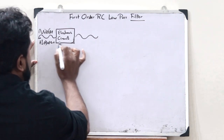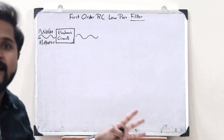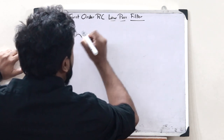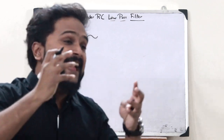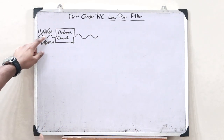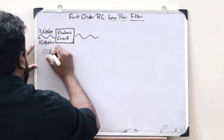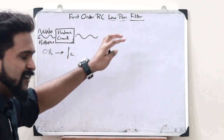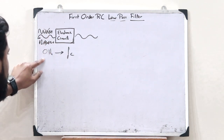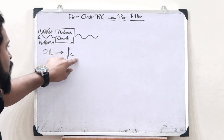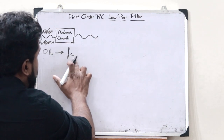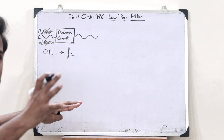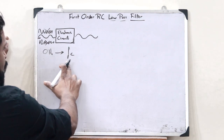Based on the frequency band being passed, there are different types of filters. One such filter is what you refer to as a low-pass filter. A low-pass filter is nothing but an electronic circuit that passes signals with a very low frequency range, starting from 0 Hz to a particular limit known as the cut-off frequency. Beyond this particular cut-off frequency, all other signals are rejected.